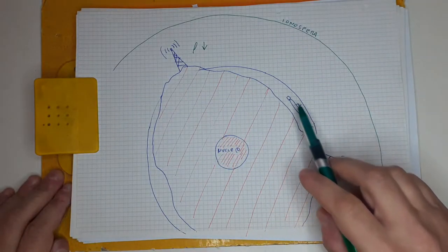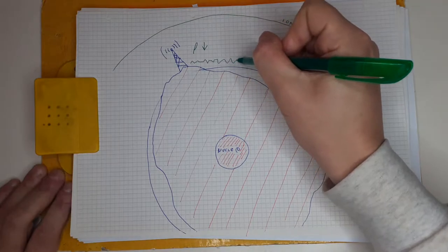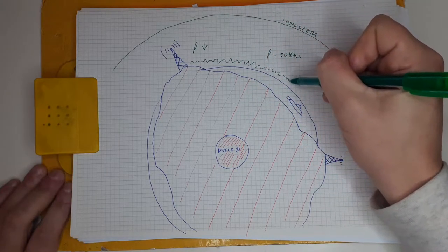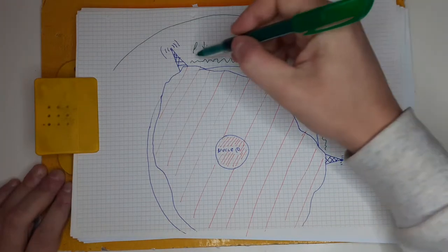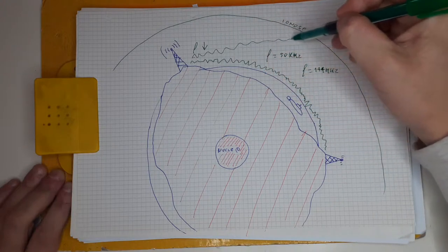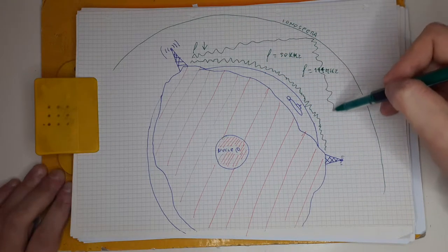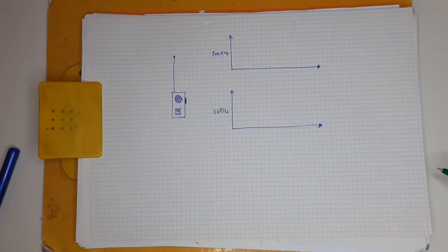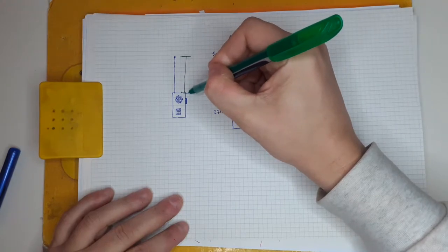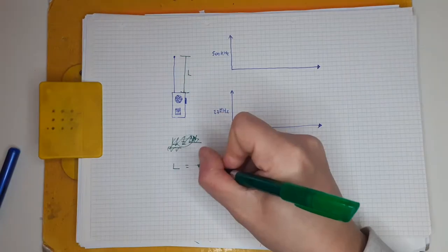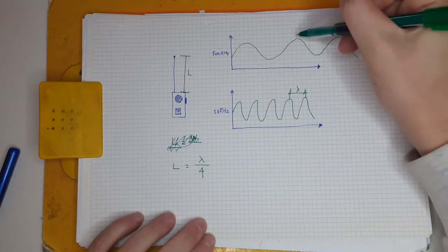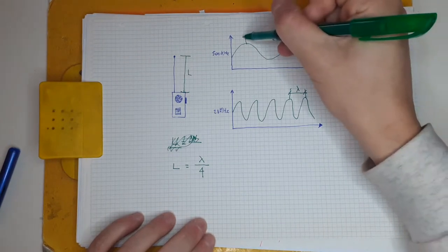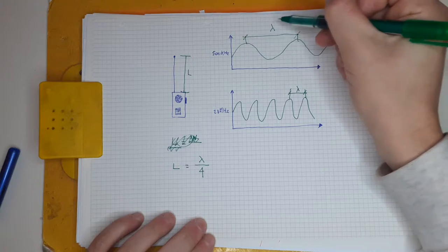Radio waves travel according to various phenomena related to their frequency and the conformation of the Earth. Theoretically, low frequencies should be used because these tend to travel along the Earth's surface and pass between obstacles, while higher frequencies are reflected by the ionosphere. The first consideration on frequency choice is that in order to have efficient antennas, their length must be a multiple of the wavelength — for example, a quarter. The wavelength increases with decreasing frequency.